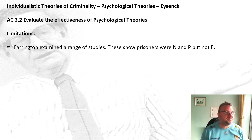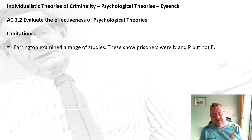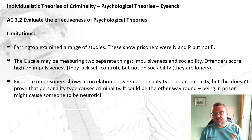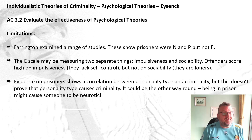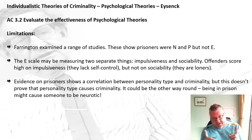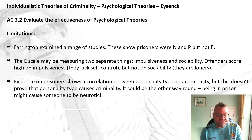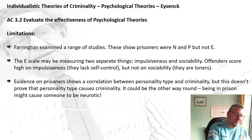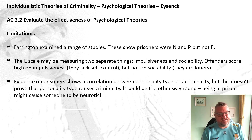However, there are limitations. Farrington et al. don't agree about E-scores — they show that prisoners were high on N and P, but not E. As noted, the E-scale may be measuring two separate things: impulsivity and sociability. Offenders score high on impulsiveness and lack self-control, but not on sociability because they tend to be loners. Furthermore, evidence on prisoners shows a correlation between personality type and criminality, but that doesn't prove that personality type causes criminality — it could be the other way around. Being in prison might make you neurotic, rather than neuroticism leading you to prison.